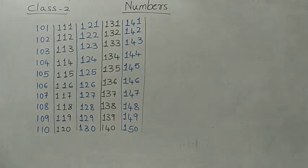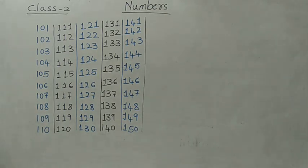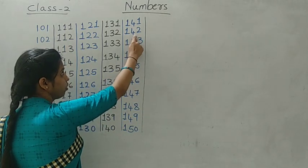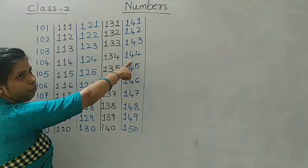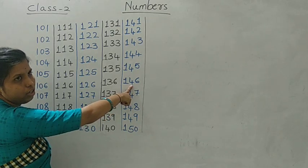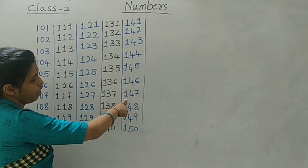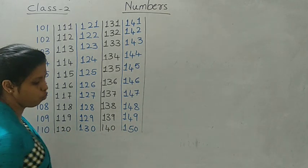This is about the fifth line. See again, I am reading the same line — now again I am reading the same line. Okay: 141, 142, 143, 144, 145, 146, 147, 148, 149.